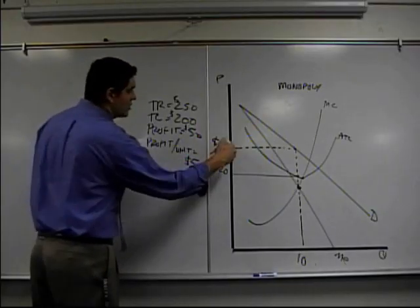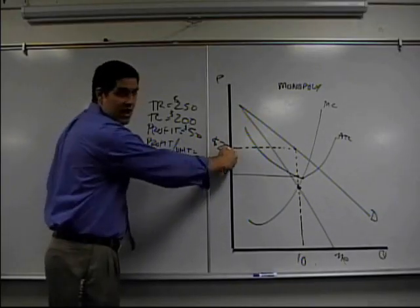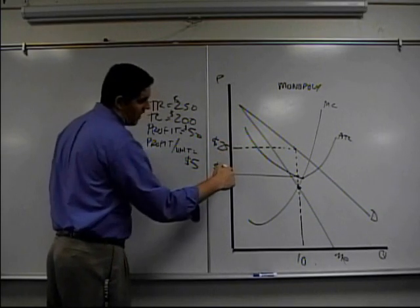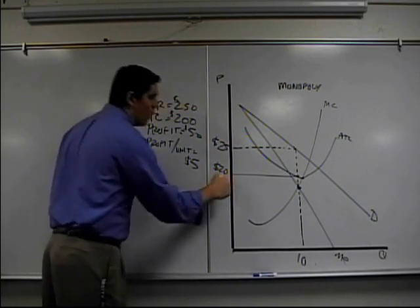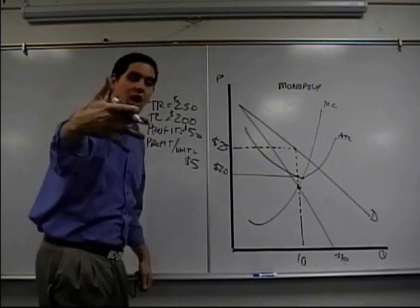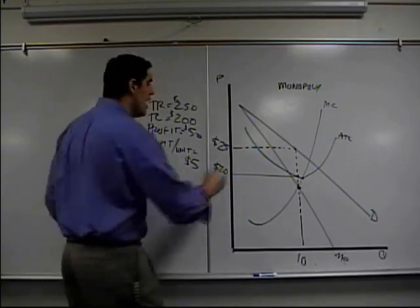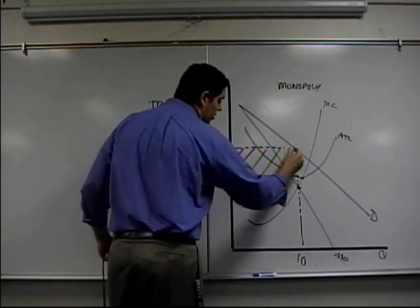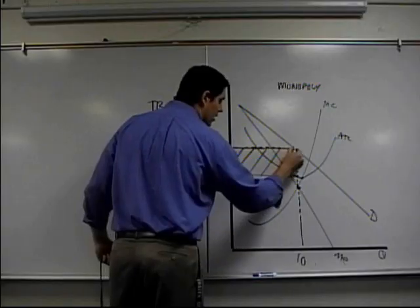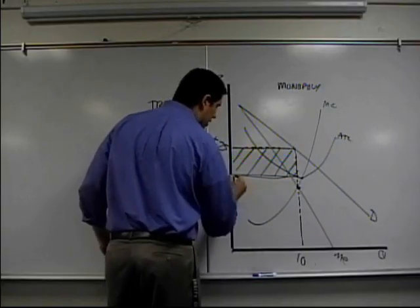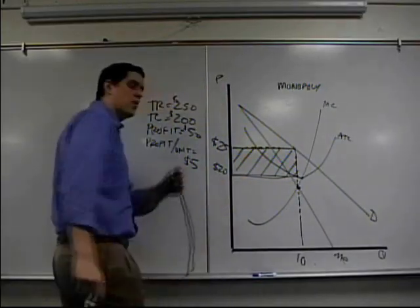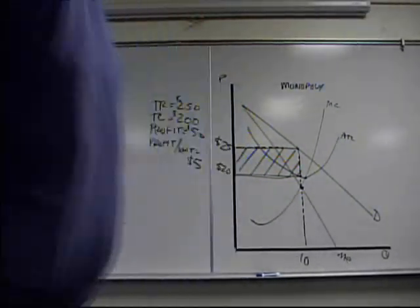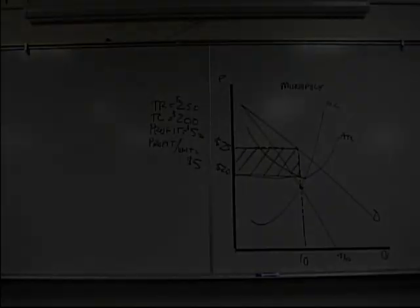And I can see it — it's right there. If I'm selling for $25 and the average total cost is $20, I'm making $5 per unit, and the profit is sitting right in your face, boom, right there. That's the concept. Hopefully you get it. Until next time. Goodbye.